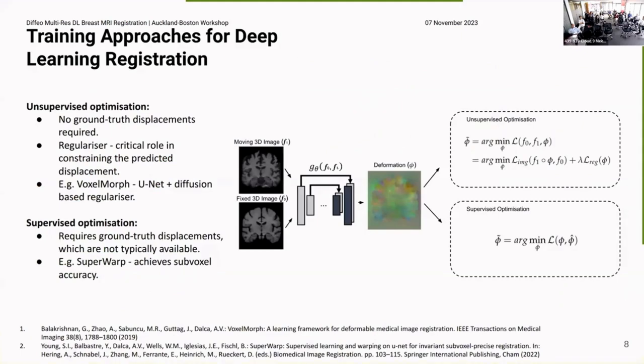Also the training approaches that you use to learn to do registration. There's two main approaches. This is the unsupervised approach where you don't have ground truth deformations. You have an image loss plus a regularizer, which imposes some prior on the predicted deformation. A really early example is VoxelMorph that used U-Net plus a diffusion-based regularizer, something like the squared L2 norm gradient of the displacement field. And then there's been research into supervised approaches, which require ground truth. However, you can generate ground truth using data augmentations, but then obviously your approach becomes super dependent on how well you do that.